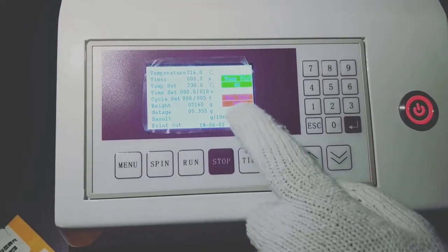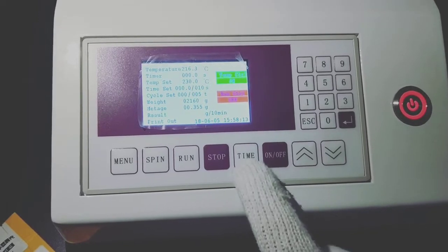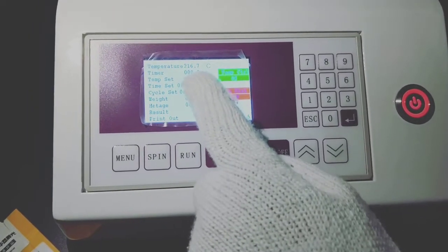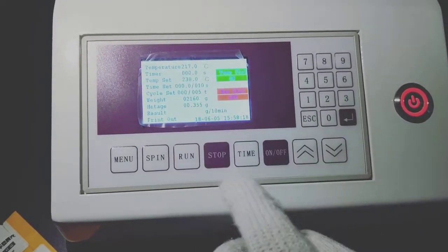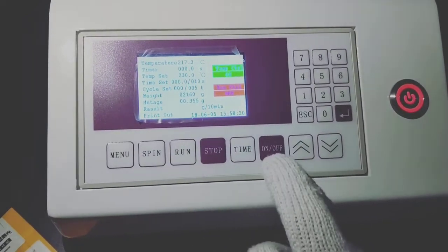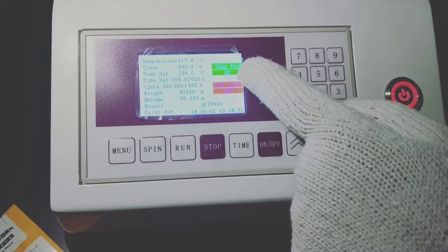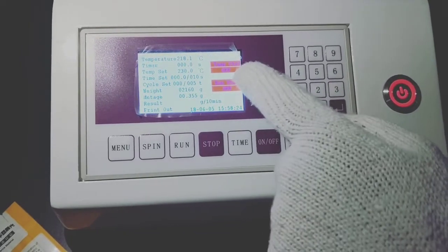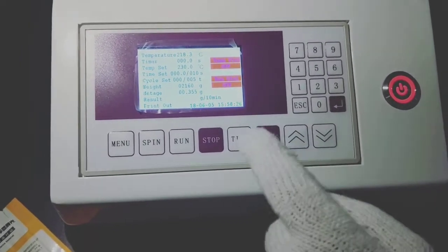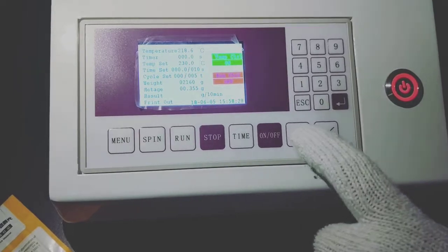Stop. And this time key is used for calculating the 4 minutes keeping time. This on-off is used for controlling the temperature heating. When this red color is off. And this is the moving key.